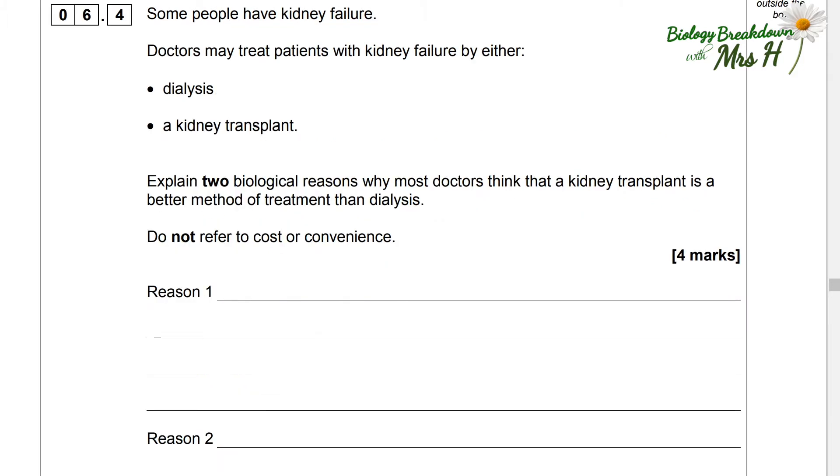Some people have kidney failure and doctors may treat patients with kidney failure by either dialysis or a kidney transplant. Explain two biological reasons why most doctors think that a kidney transplant is a better method of treatment than dialysis. Do not refer to cost or convenience and they've put that there because that's what we'd normally write. We need to think about something else.